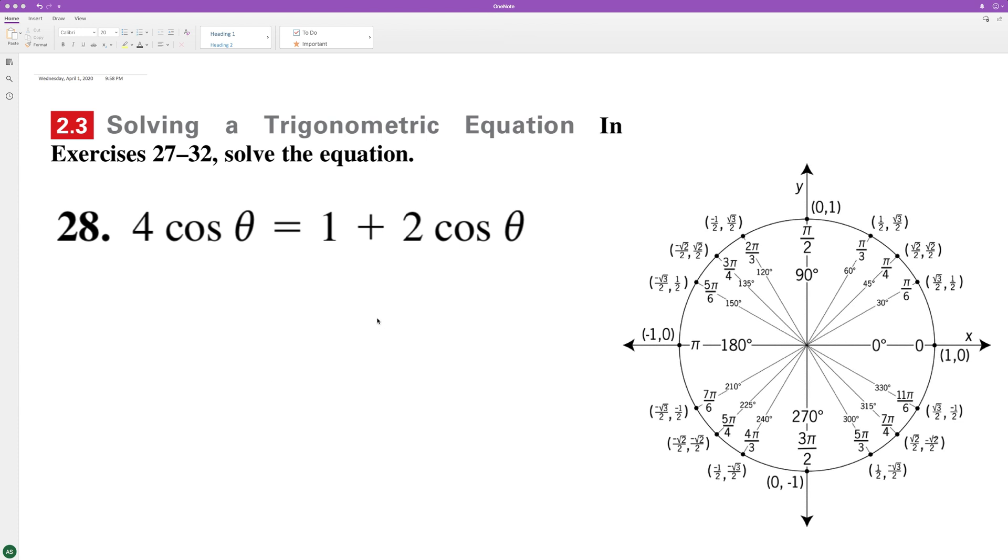Here we want to figure out all the values of cosine that make it valid for this equation, essentially from zero to two pi.